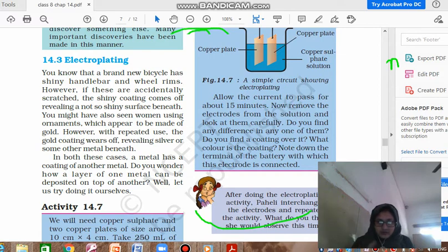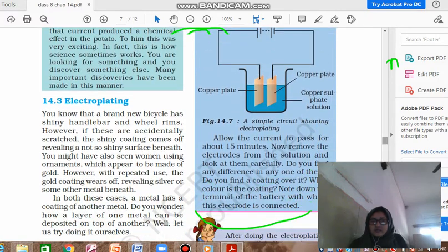However, with repeated use, same is with the jewelry and ornaments. They are not original. The gold coating also wears off, revealing silver or some other metal beneath. In both these cases, there is a coating of another metal, and this coating is done using the process which is shown here in figure 14.7. Again, the same electric circuit - a battery is taken and two copper plates are taken.